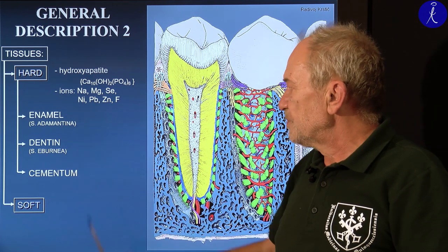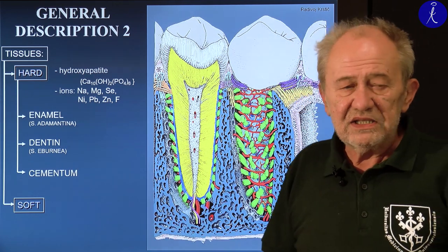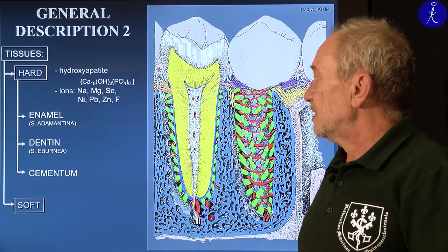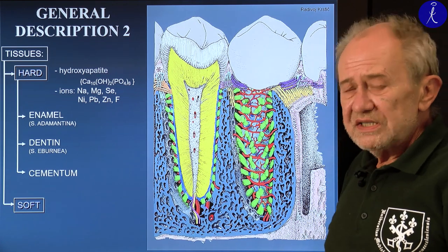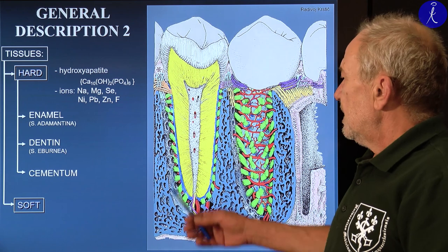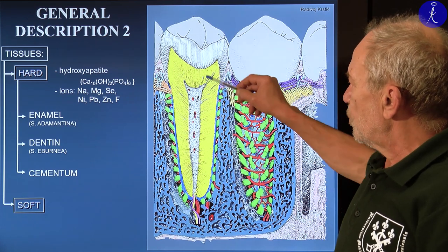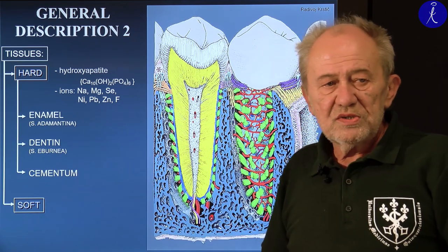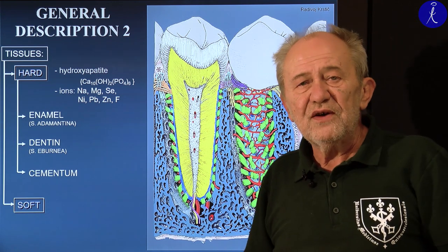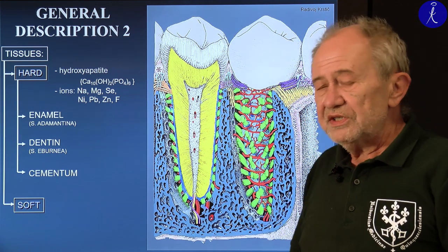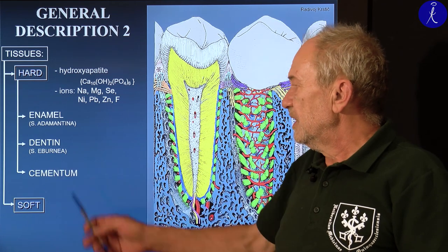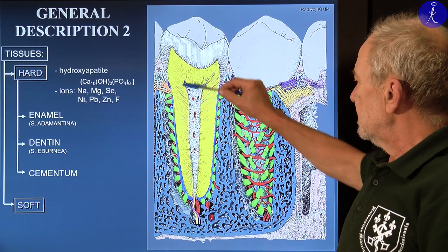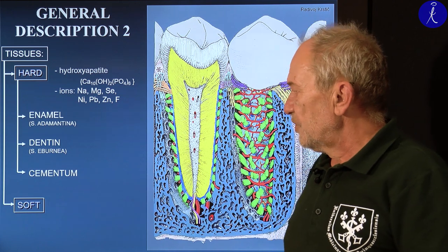A much nicer name was previously used for enamel: substantia adamantina — adamas means diamond, referring to its extreme hardness. All along the tooth, a deeper tissue called dentine is found, previously called substantia eburnea — ebur meaning ivory, again referring to its toughness. Finally, just on the root outside the dentine, there is a thin layer of cementum — this is the third hard component.